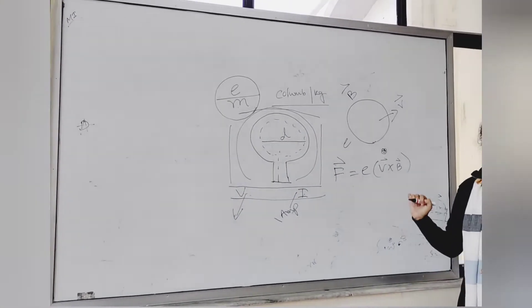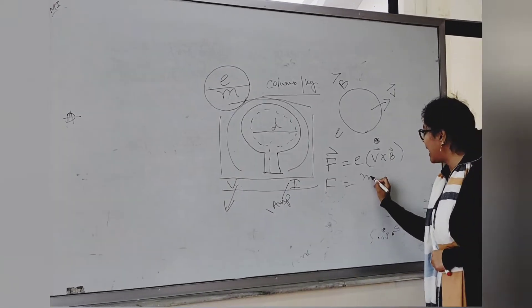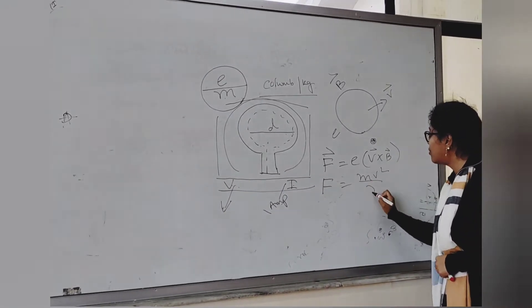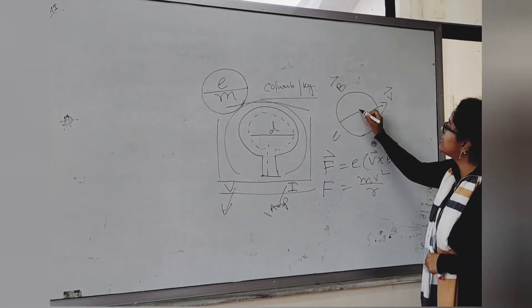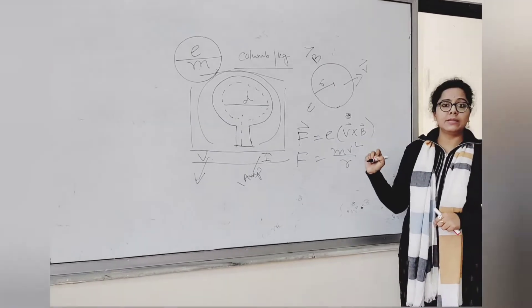If we consider Newton's force, the Newton's law of force, what do we know? F equals to M V squared by R, where R is the radius of the orbit.